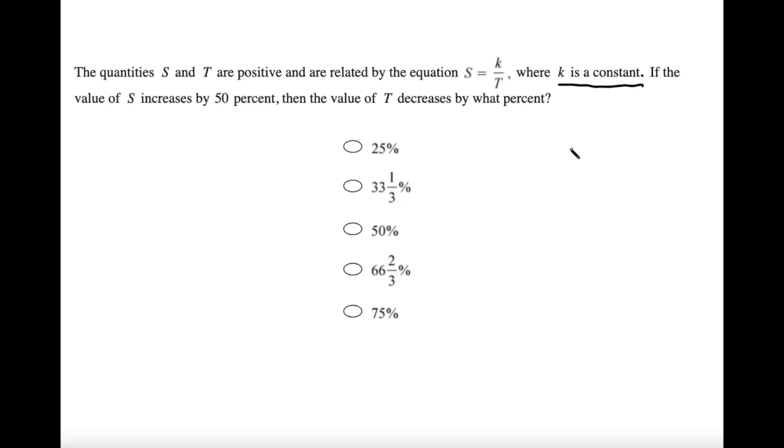What is a constant? Well, it's a number that does not change. Unlike, for instance, s and t. The problem tells us we can vary s and t, they're variables, but k remains constant.